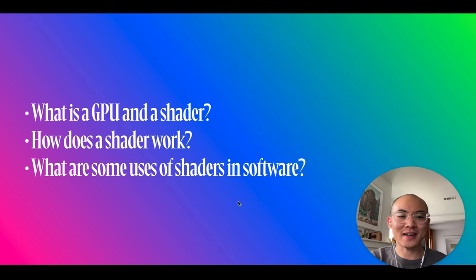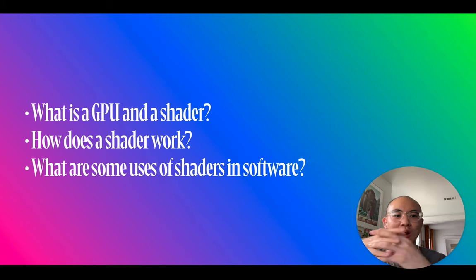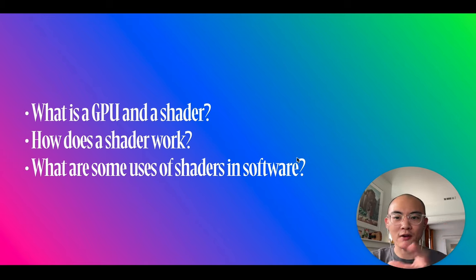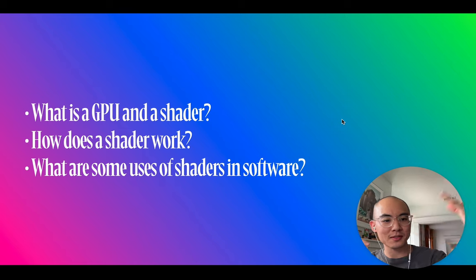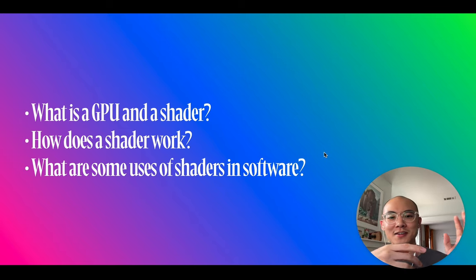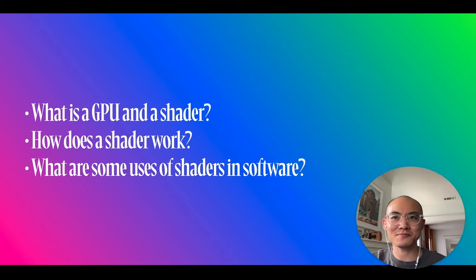To recap: we talked about the graphics processing unit, the graphics pipeline, and how it's made for 3D graphics. A shader is a type of program that runs in that pipeline at a specific step — specifically the fragment shader. A shader takes inputs like textures, time, or fragment position, and outputs a color for that fragment. With shaders you can do basic image processing, color art, 3D rendering, and even make 3D models out of math.